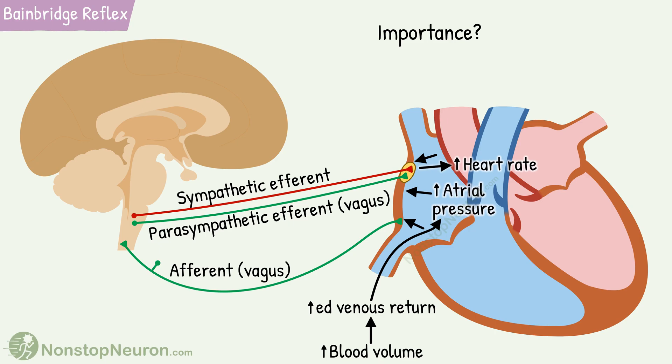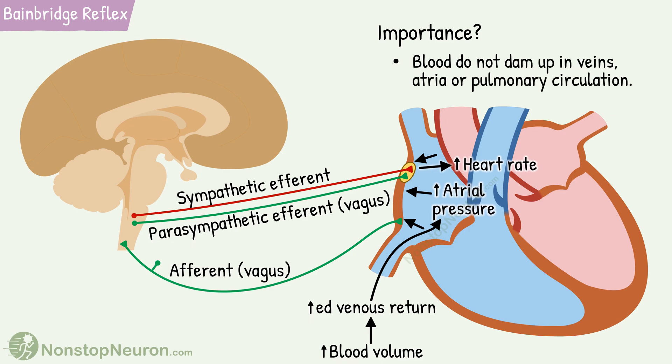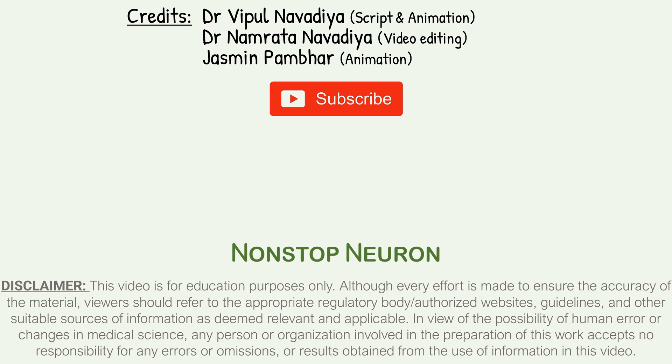The importance of this reflex is that it helps increase cardiac output with an increase in venous return, so the blood does not dam up in the veins, atria, or pulmonary circulation. In summary, the Bainbridge reflex increases heart rate in response to increased atrial pressure, preventing damming of blood in veins, atria, and pulmonary circulation.